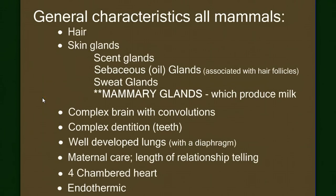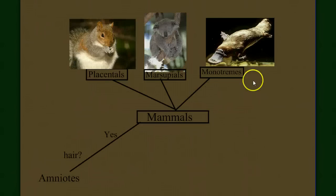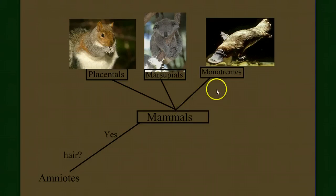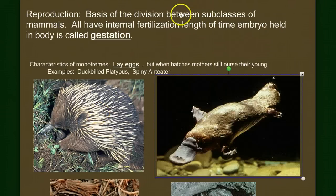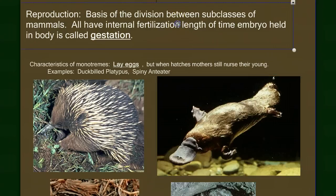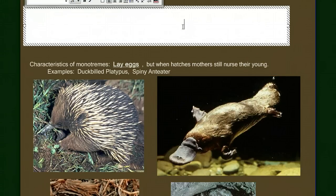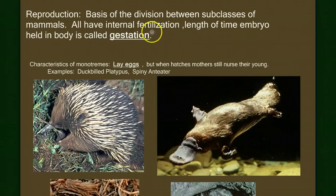So those are the general mammal characteristics. What we have left is to look at the three subgroups — the monotremes, the marsupials, and the placentals — and see what makes each subclass different from the others. It turns out the basis of division has to do with the reproductive event, or the birth event. All mammals have internal fertilization, but the length of time the embryo is held in the female's body — called gestation — is very different among the groups.